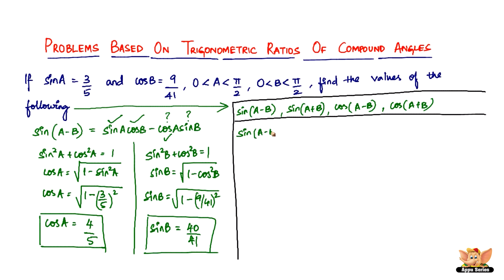Sin A minus B is nothing but sin A cos B minus cos A sin B. All we have to do is substitute. Sin A is 3 by 5 into cos B is 9 by 41 minus cos A is 4 by 5 into sin B is 40 by 41. On solving this, you get minus 133 by 205. I'm not going to spend time on multiplying this, I'm sure you can do that. I'm just going to help you get to this stage because from here it's pretty easy.